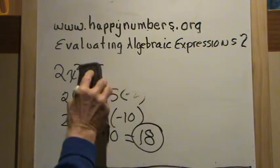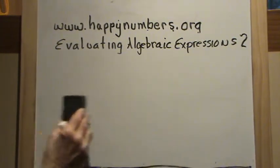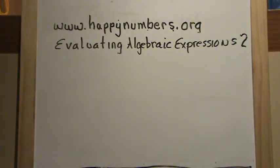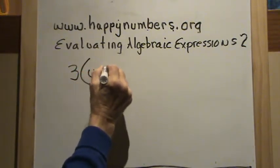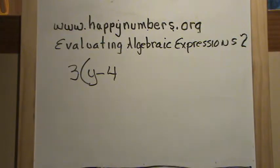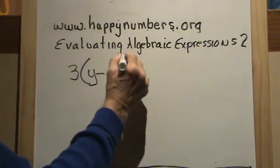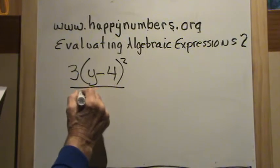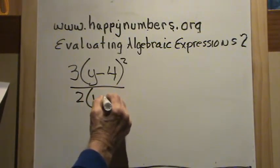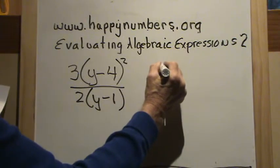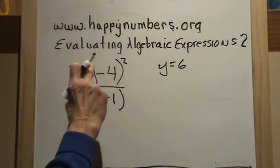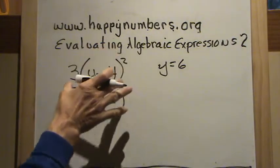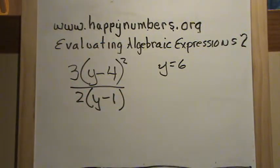One more problem: 3 times the quantity y minus 4, squared, divided by 2 times the quantity y minus 1, and y equals 6. The division line separates the problem into two parts — the top part, the division line, and the bottom part. Go ahead and try working that, then turn it back on.